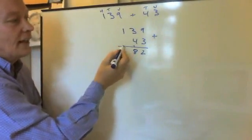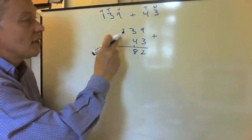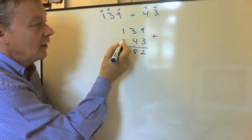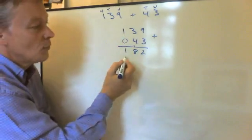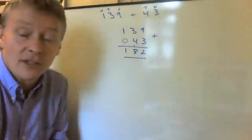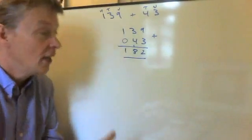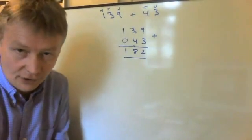And there's nothing to carry into the hundreds column, so we just add the one that's there. And if you like, there is a 0 here. So 1 plus 0 is 1. So the answer to this question, 139 plus 43 using this method is 182.